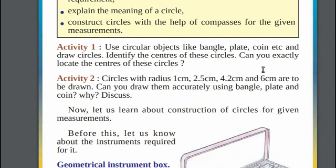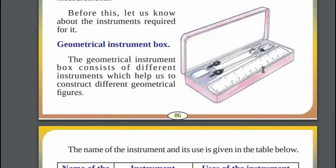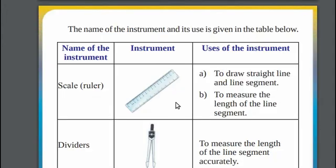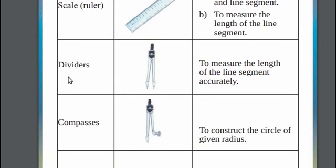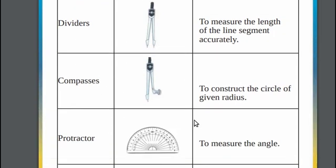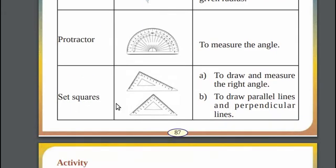So we make use of generic standard geometrical instruments. When you open a generic geometrical box, you can see many instruments. In a general geometrical instrument box, you can find scale or a ruler, dividers, compass, protractor and set squares.